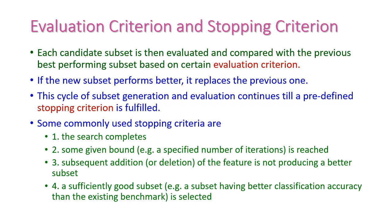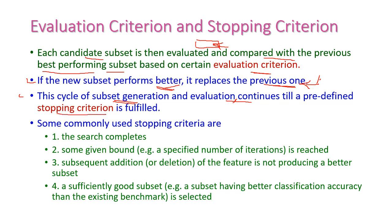The selected subset will be evaluated based on comparison with the previous best performing subset. This is called the evaluation criteria. The selected subset will be compared with the previous best subset. If the new subset performs better, then replace the existing subset with the new subset. This cycle of subset generation and evaluation will continue until the predefined stopping criterion is fulfilled.